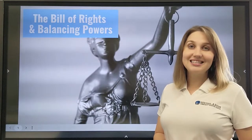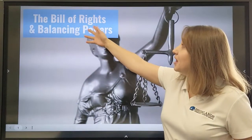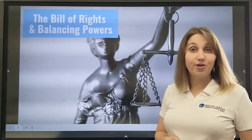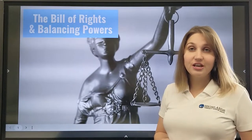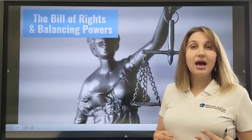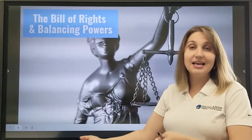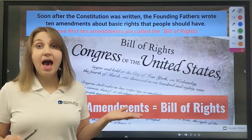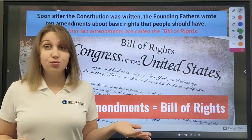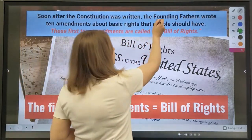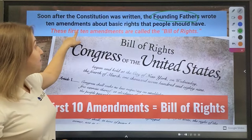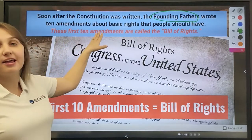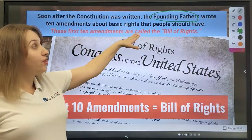Hello, everyone. Our lesson today is going to be about the Bill of Rights and Balancing Powers. We are going to talk about the first 10 amendments to the Constitution, and we will also discuss what kind of power belongs to the states, and what power belongs to the federal government. Very soon after the Constitution was written, the Founding Fathers wrote 10 amendments about basic rights that people should have. These first 10 amendments are called the Bill of Rights.